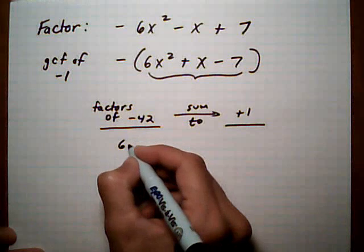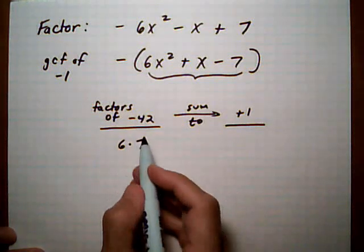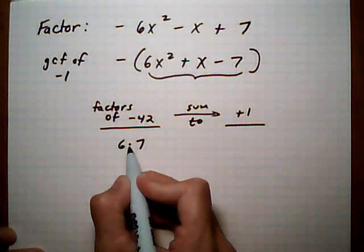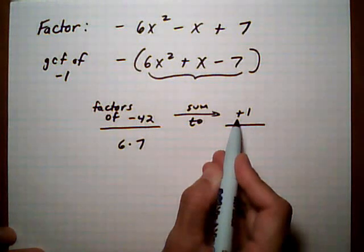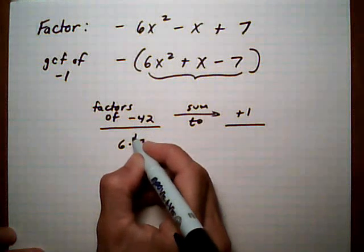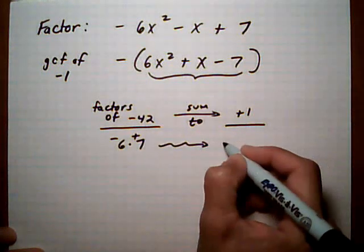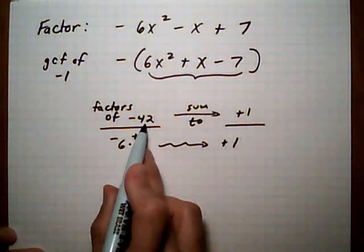I know that 6 times 7 is going to give me negative 42 if I have one of these being negative, and I need them to add up to a positive 1, so I want the bigger one to be the positive. So that looks like it's going to work. It adds up to positive 1 and it multiplies to negative 42.